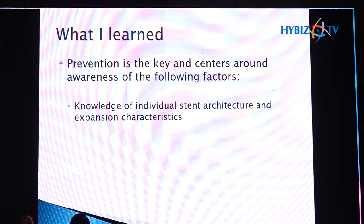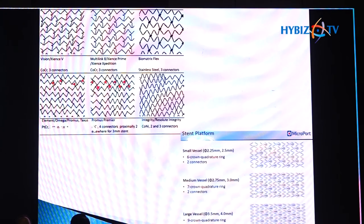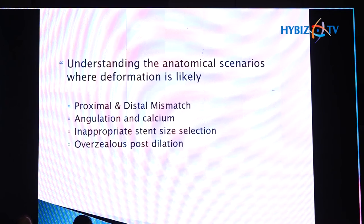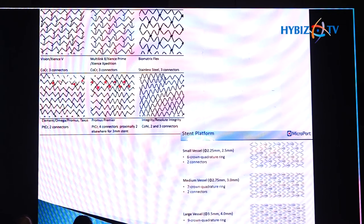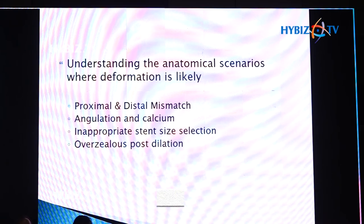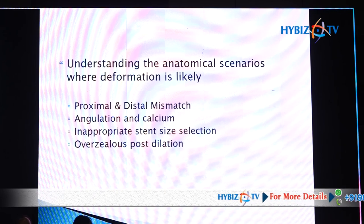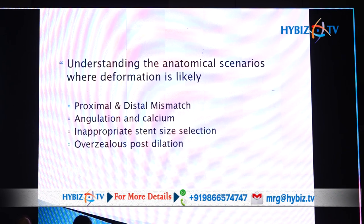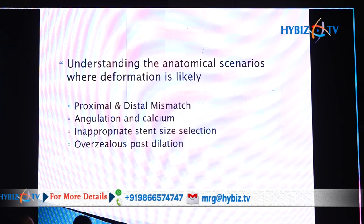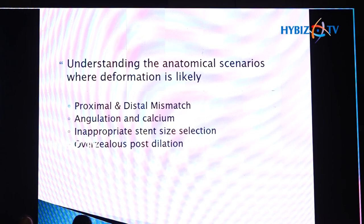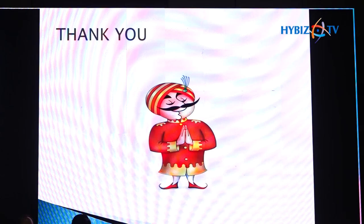So what have I learned from these cases? Awareness of the following factors is important as far as stent fractures are concerned. First, knowledge of individual stent architecture and stent expansion characteristics — from the literature, the majority of longitudinal deformation and stent fractures have been reported with stents that have two connectors. The Promus Element we used has a two-connector design, and the new Firehawk stent up to 3 mm size also has two connectors — making them excellent for deliverability but with slightly less radial strength. Second, understanding the anatomical scenario: proximal-distal mismatch, angulation, calcium, inappropriate side selection, or over-zealous post-dilatation are all scenarios where stent fractures can happen. In our cases we were lucky, but there are reported cases where cardiovascular events may increase. Thank you for your patient listening.